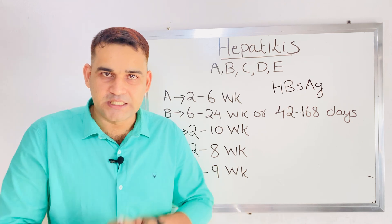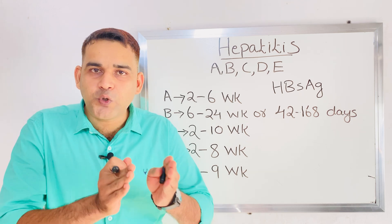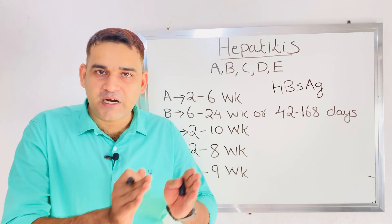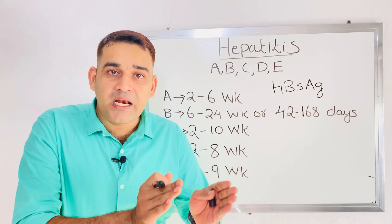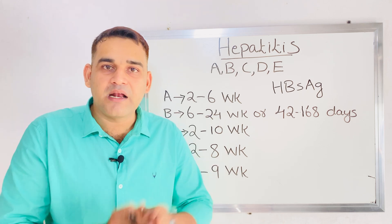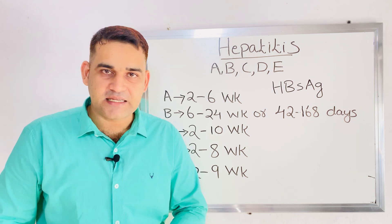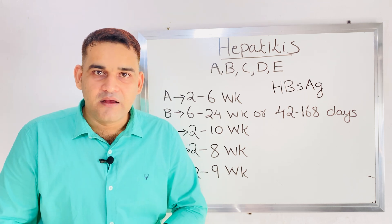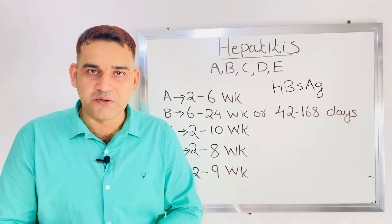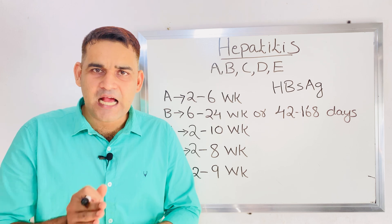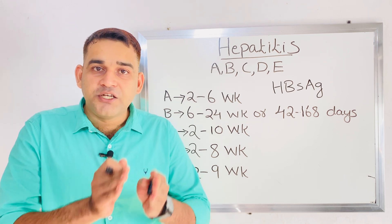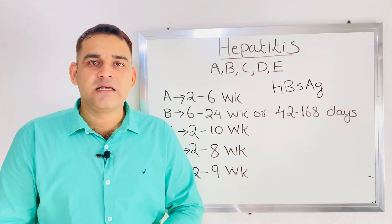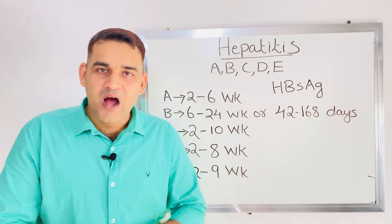If a pregnant woman is hepatitis B positive, to prevent transmission of hepatitis B to the child, soon after delivery — within 12 hours — you must give the first dose of the hepatitis B vaccine as well as administer hepatitis B immunoglobulin. This reduces the risk of the child getting hepatitis B.